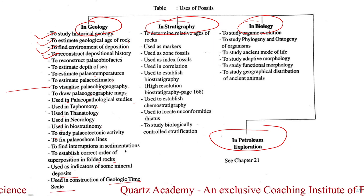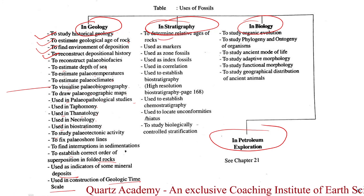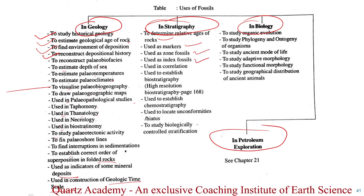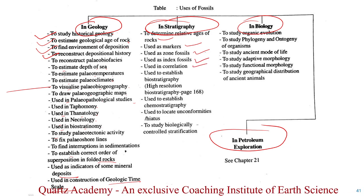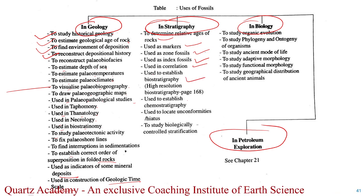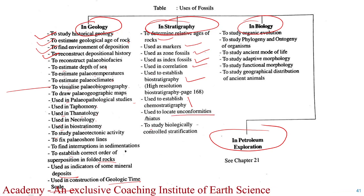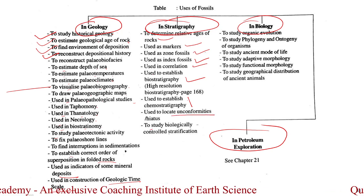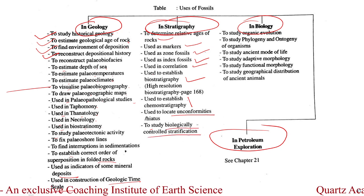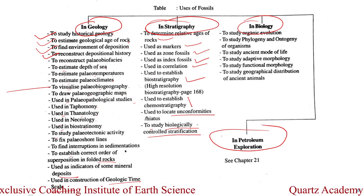In stratigraphy, we use fossils to determine the relative age of rocks, used as marker zones, zone fossils, index fossils, used in correlation of different lithologies, to establish biostratigraphy, chronostratigraphy, and to locate unconformities. We also use fossils in stratigraphy to study biologically controlled stratification. In biology itself, fossils have lots of uses.